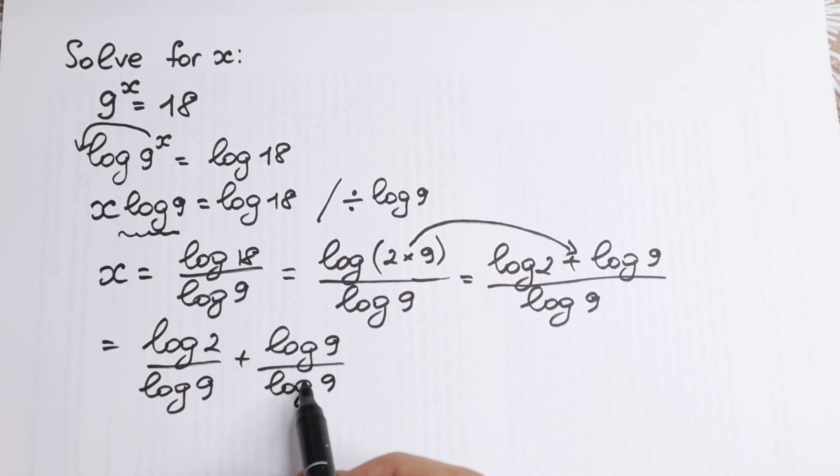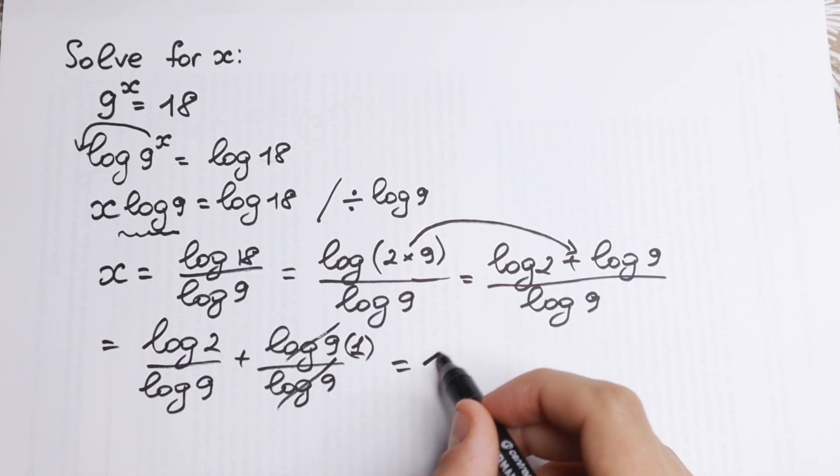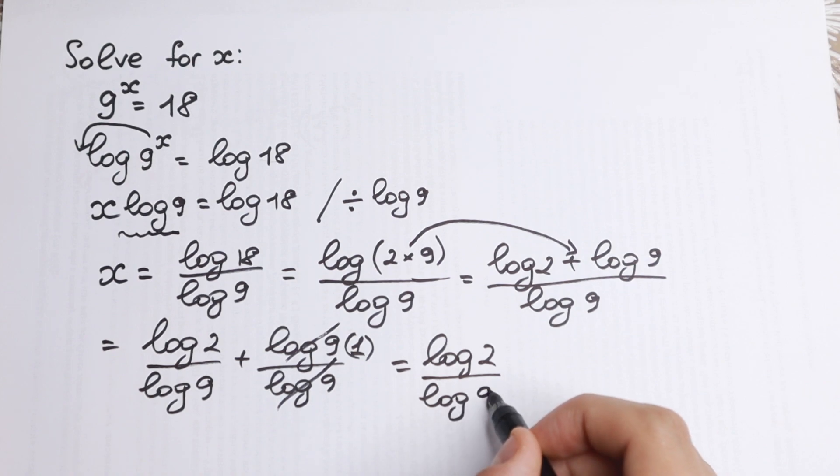And if we look closely, this one is the same. So we can easily cancel this, this is equal to 1. So as a result, we will have our final answer: log 2 over log 9, plus 1.